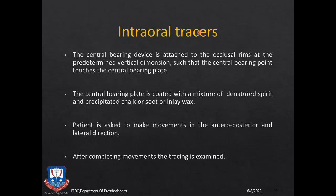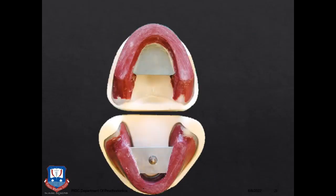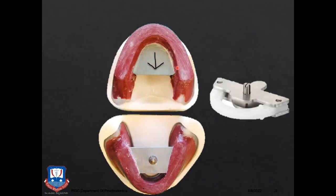Coming to the intraoral gothic arch tracers: a central bearing device is attached to the occlusal rims — a central bearing plate is attached to the maxillary occlusal rim and a central bearing device is attached to the mandibular occlusal rim. It has a spring-loaded plunger or styli in the center of the central bearing plate, and this styli makes an arrow-shaped mark on the central bearing plate. The tip of the arrow represents your centric relationship — that is where the patient has to bite.